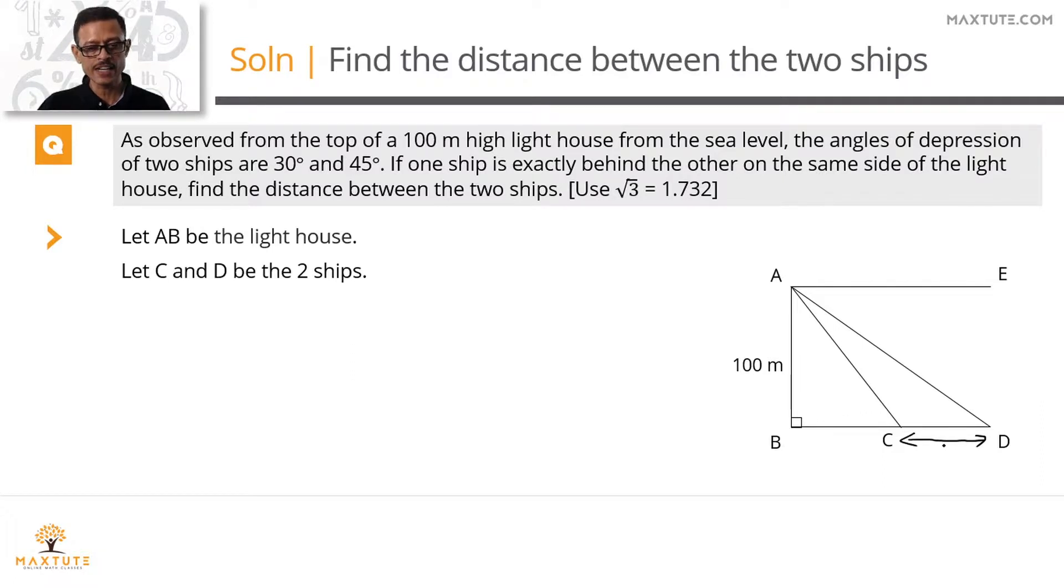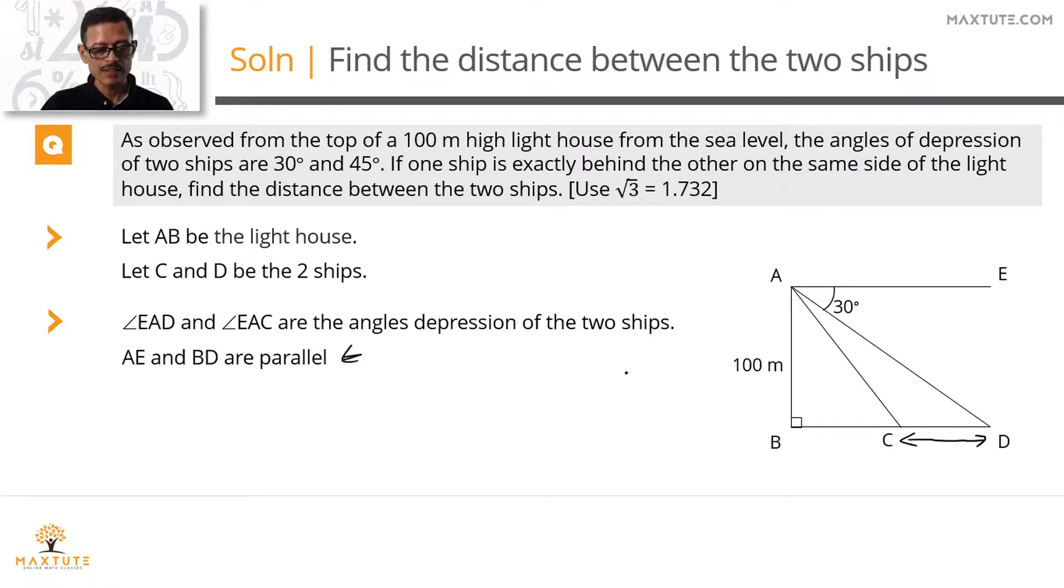The question gives us the angles of depressions of these two ships as observed from the lighthouse. Angle EAD is the angle of depression of the first ship D, equal to 30 degrees. AE and BD are parallel, and AD is a transversal that cuts through it. Therefore interior alternate angles will be equal, so angle EAD equals angle ADB, which is also 30 degrees.